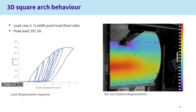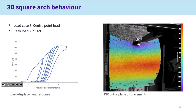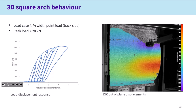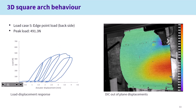Case two was loading at one quarter of the width. Looking at the DIC displacement, we had a reduced stiffness but the peak load was a bit higher than the previous one. In terms of mechanism, we are still mobilising just one section of the arch. Whereas if we move to load case three — loading in the centre — we're actually mobilising the full width of the bridge and getting essentially a two-dimensional response, and the capacity was the highest. Going back to one-quarter width on the other side, capacity was a little bit lower. On the other edge, capacity was even lower.